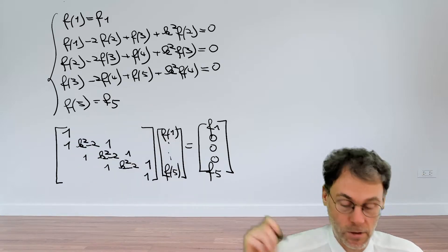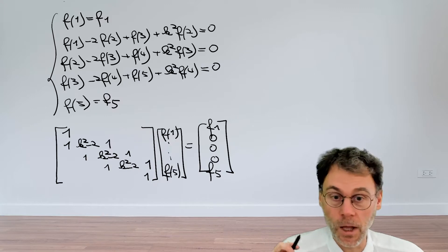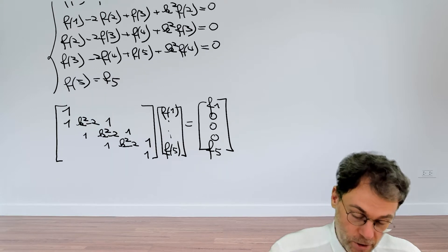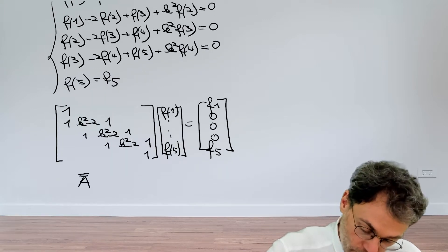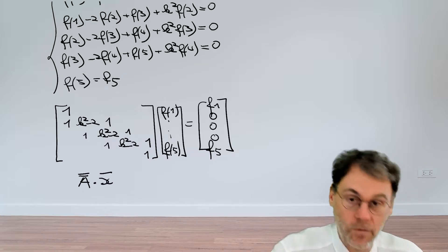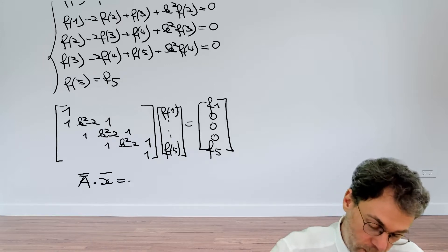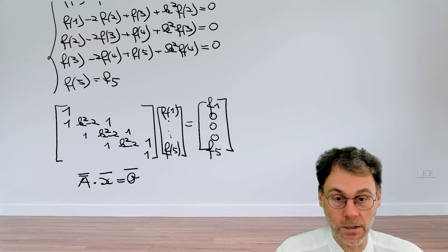So here we have it. This is our linear problem. We have a matrix A times a vector of unknowns equal to a known right-hand side.